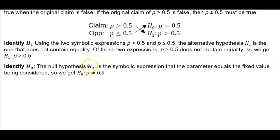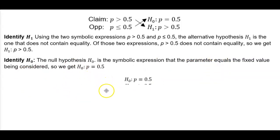Identifying the null hypothesis, the null hypothesis is the symbolic expression that the parameter equals the fixed value being considered. So now we can identify that the null is P is equal to 0.5, and the alternative hypothesis is that P is greater than 0.5.